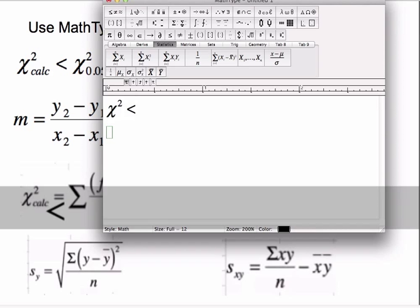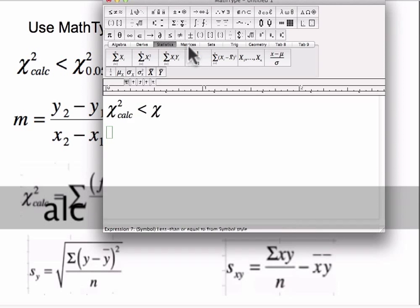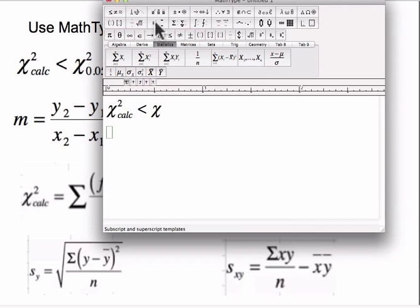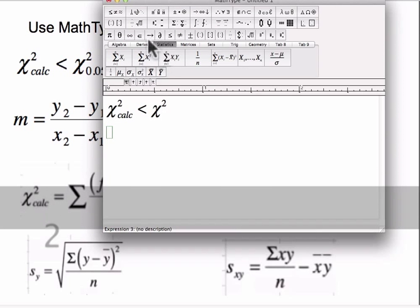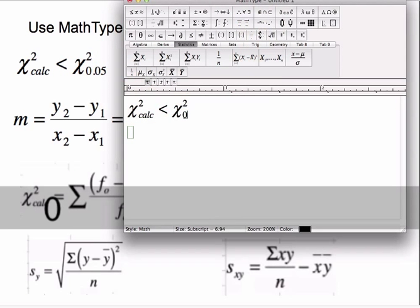I just put in a less than sign from the keyboard, and then I can do chi-squared again. Actually, I need a subscript over here too. So for this chi-squared, I need a subscript, so I'm going to click on here and click on this little one here for the subscript on the right, and I just type in calc. And over here I'm going to do a similar thing, squared, press the right arrow, and then I'm going to do subscript 0.05. Okay, so we're done with that.